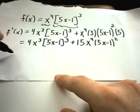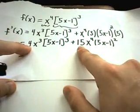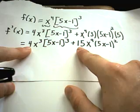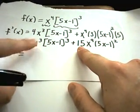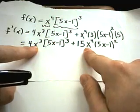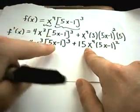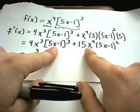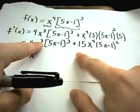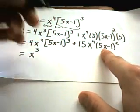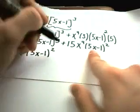Now at this point we can keep factoring even a little further. I look at my numbers — there's a 4 and a 15. The largest number that goes into 4 and 15 is just 1, so you can't factor a number out. I have x to the third power and x to the fourth power, so I can factor out x to the third. I also have a 5x minus 1 and another 5x minus 1 — just like with the x's, you pull out the smaller power — so I can pull out 5x minus 1 squared.